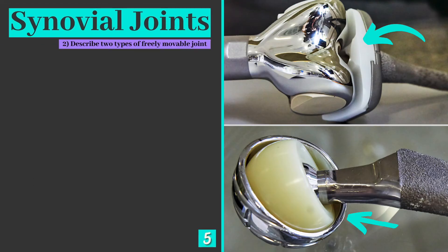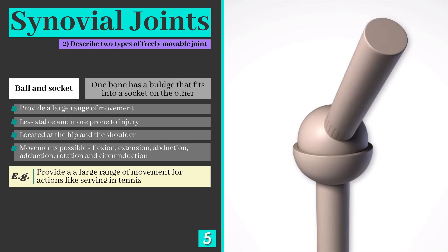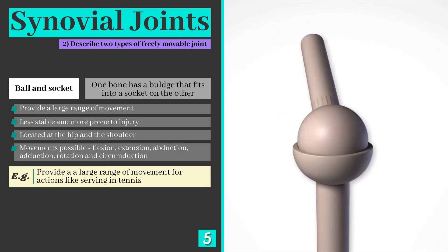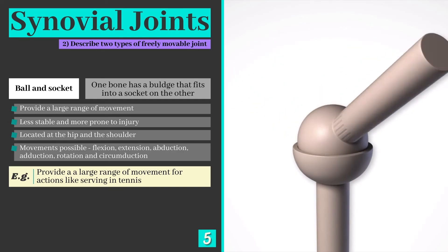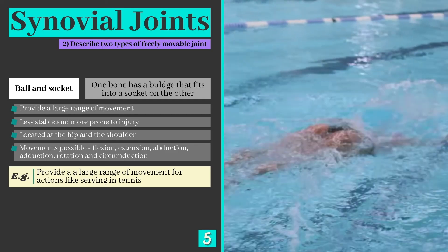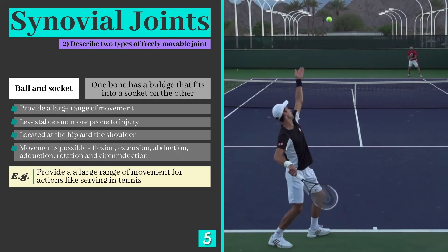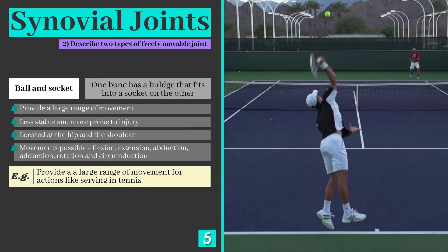We now move on to our second learning objective: to describe the two types of freely movable or synovial joint. Although there are several, you only need to know two for your exam. Ball and socket joints form as one bone has a bulge or ball-like structure that fits into the socket on the other bone. They provide a wide range of movement but are less stable and therefore more prone to injury. Ball and socket joints can be found at the hip and shoulder, enabling actions such as bowling in cricket, swimming the butterfly stroke, or serving in tennis.